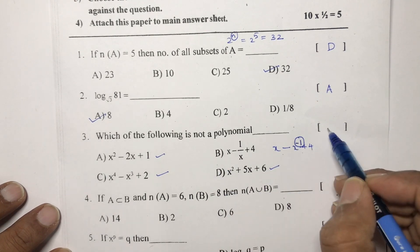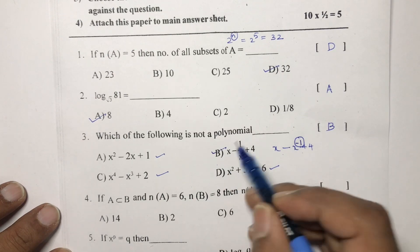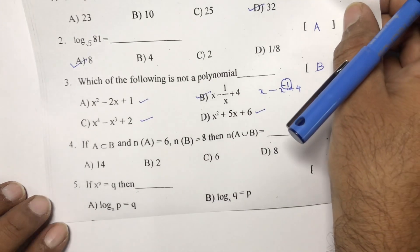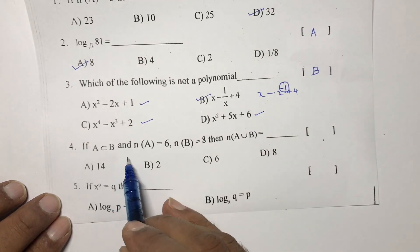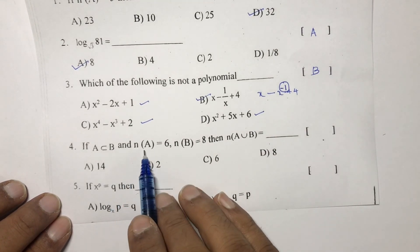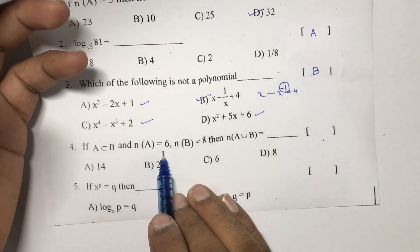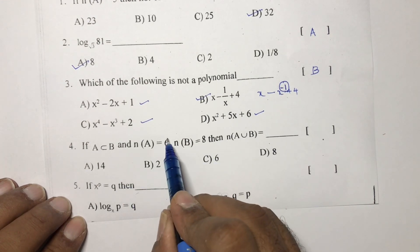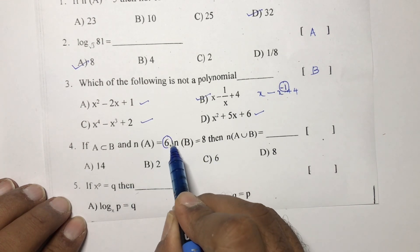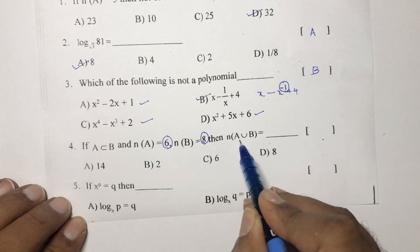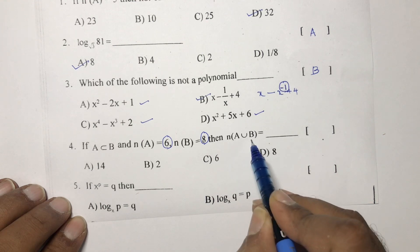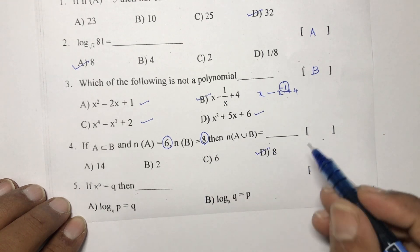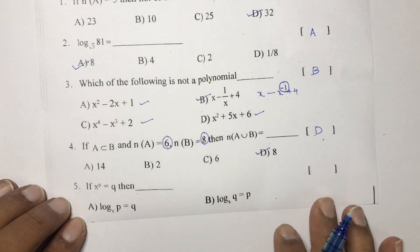Next: A is a subset of B. Number of elements in A is 6, number of elements in B is 8. Since all elements of A are already in B, the union of A and B gives 8 elements. The correct option is D.